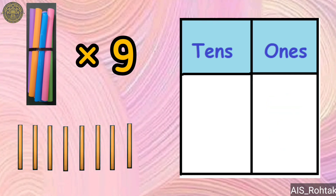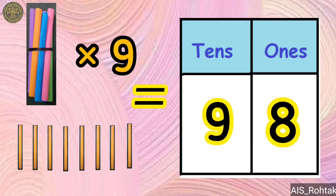Nine bundles and eight loose sticks make the number 98 — nine tens and eight ones.